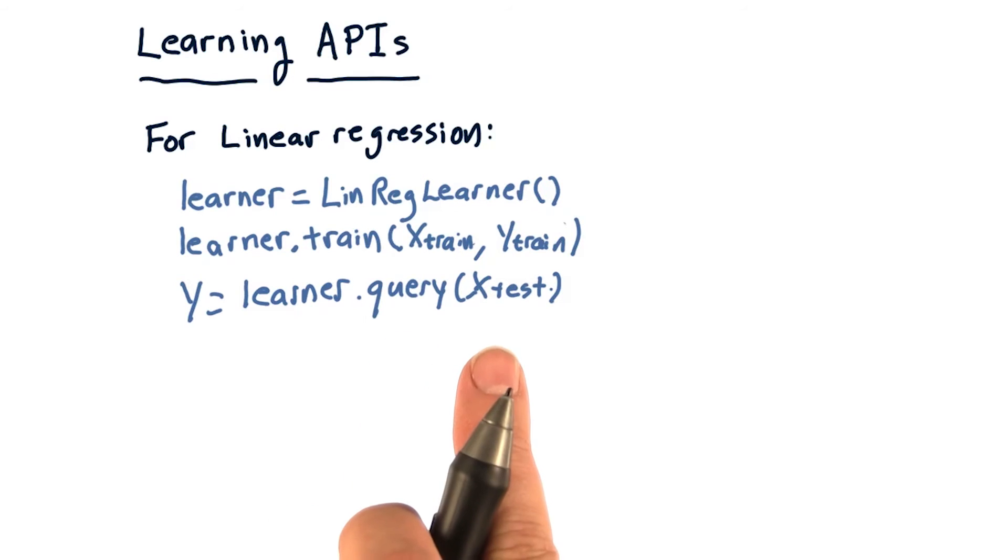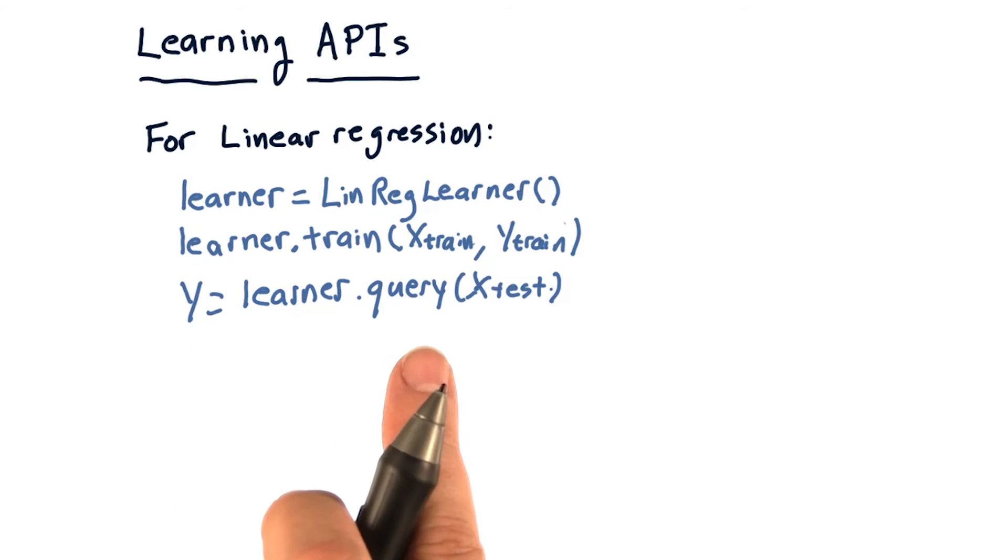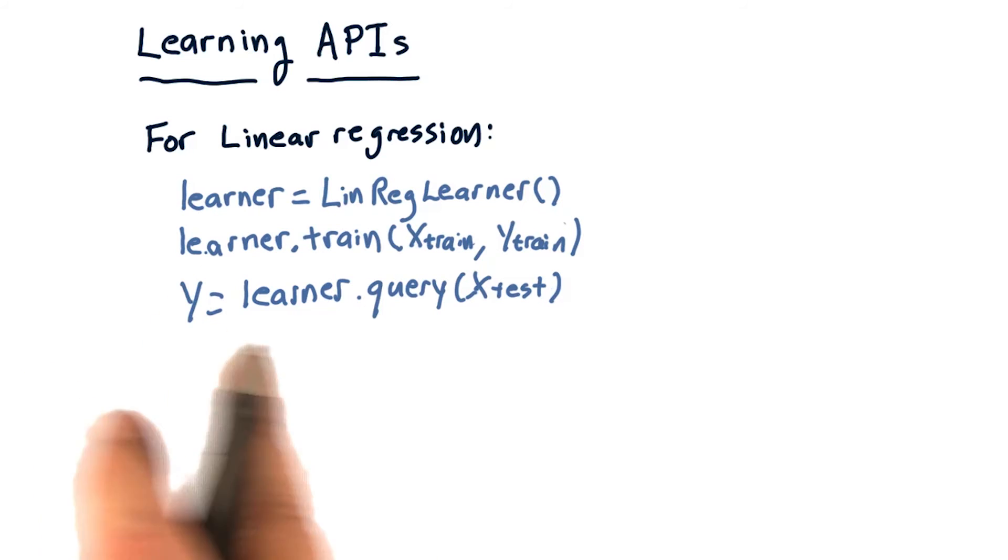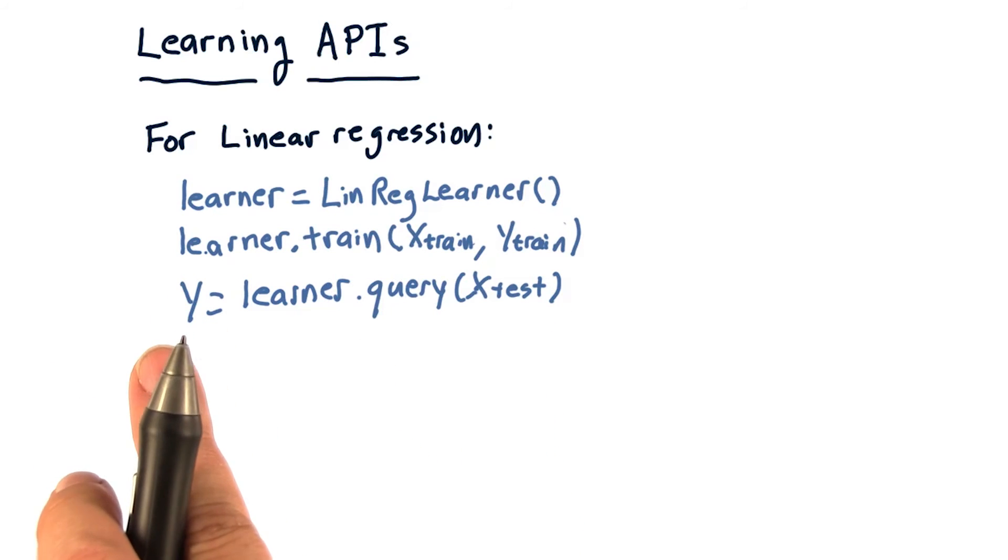And a query function that takes a list of x values that you want to test and returns a list of y values according to what the model thinks they should be. These y values in turn are the ones that will compare to y test to see how well the algorithm works.